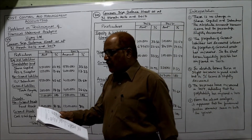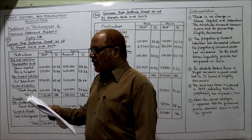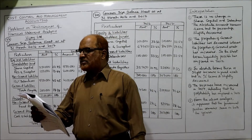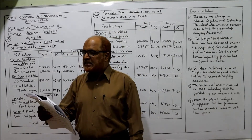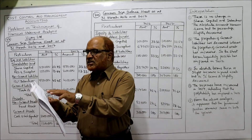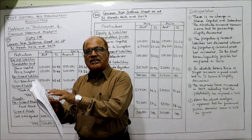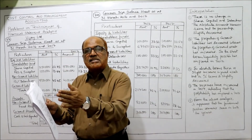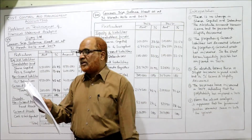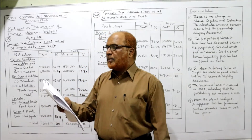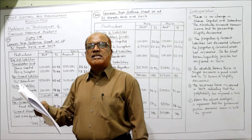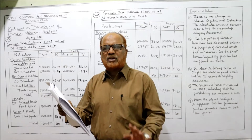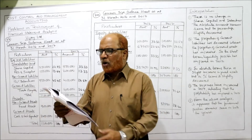See the 23rd problem: from the following balance sheets of Vijay Limited as at 31st March 2017 and 2016. In the problem, 2017 is given first, then 2016, but we should take 2016 first and then 2017. We have to prepare a common size balance sheet — no interpretation is asked, only the preparation of the common size balance sheet.